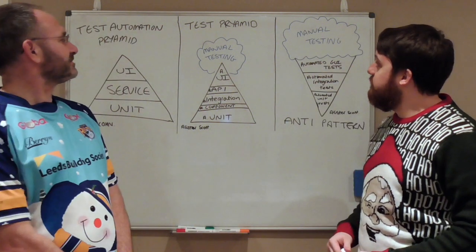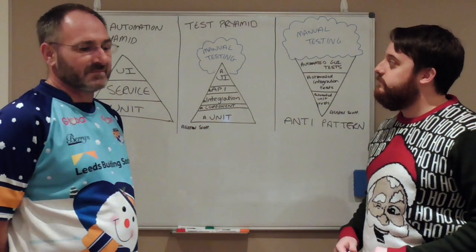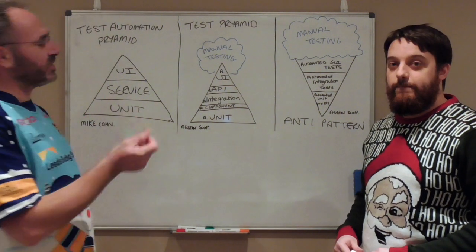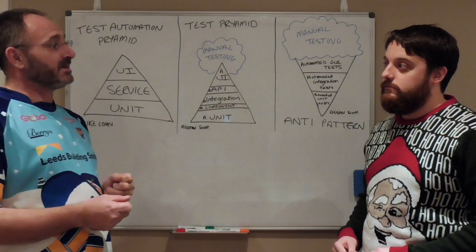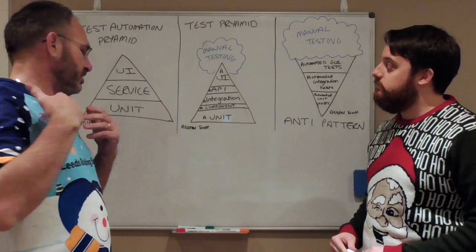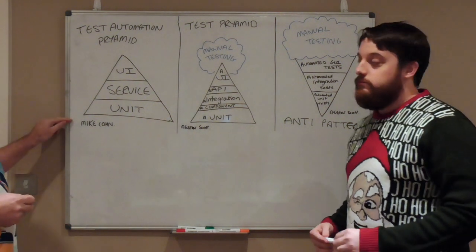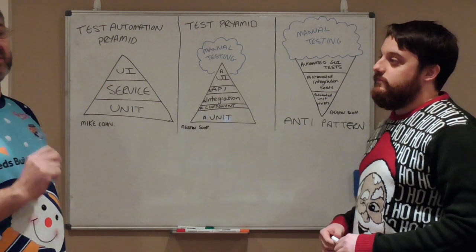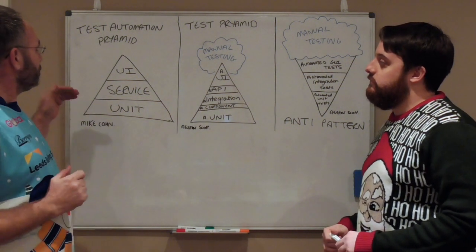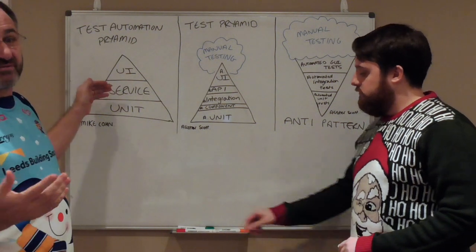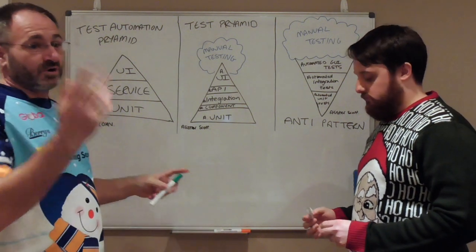Let's have a look at the various forms of this test pyramid or test automation pyramid. We should start with the history of where it all came from and what the original ideas were. The original pyramid was done by Mike Cohn and was called the test automation pyramid — it was solely about automation. It said you should do more unit tests rather than service-level tests, which they called service, and then the UI.